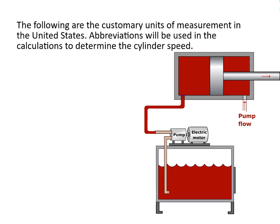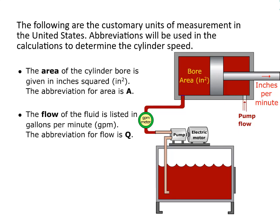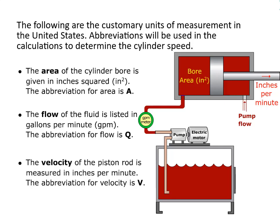The following are the customary units of measurement in the United States. Abbreviations will be used in the calculations to determine the cylinder speed. The area of the cylinder bore is given in inches squared; the abbreviation for area is A. The flow of the fluid is listed in gallons per minute, or GPM; the abbreviation for flow is Q. The velocity of the piston rod is measured in inches per minute; the abbreviation for velocity is V.